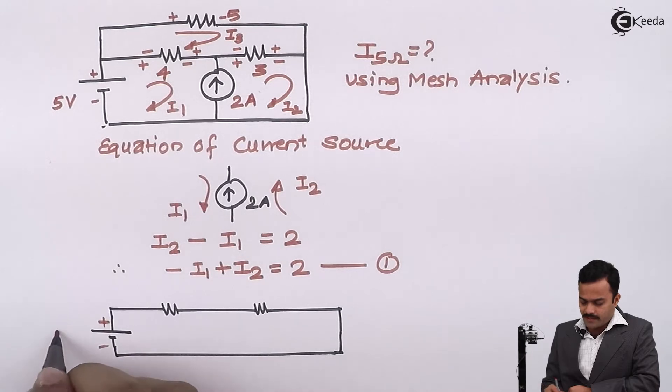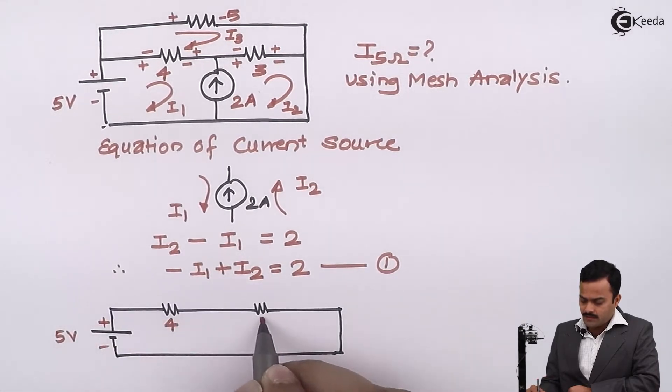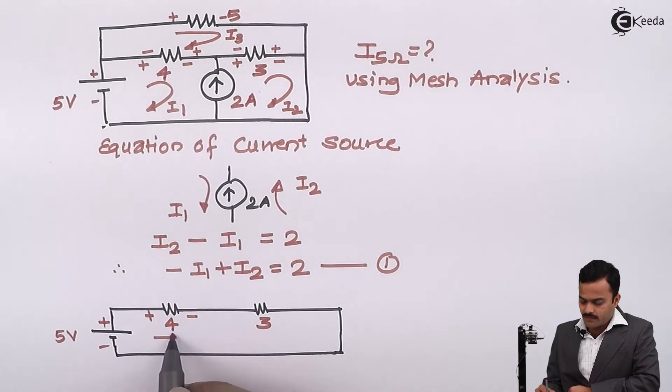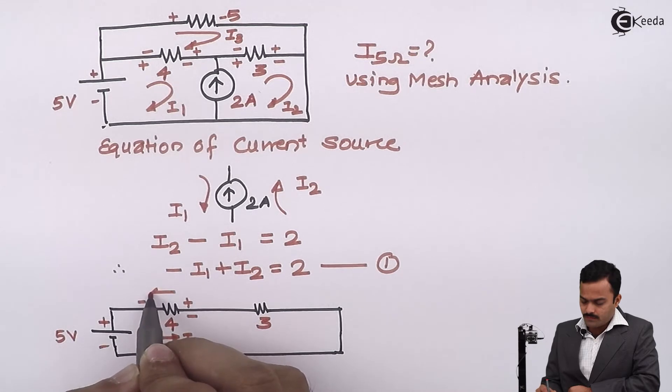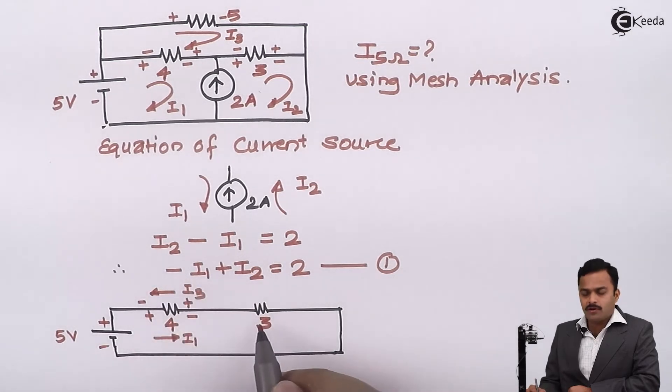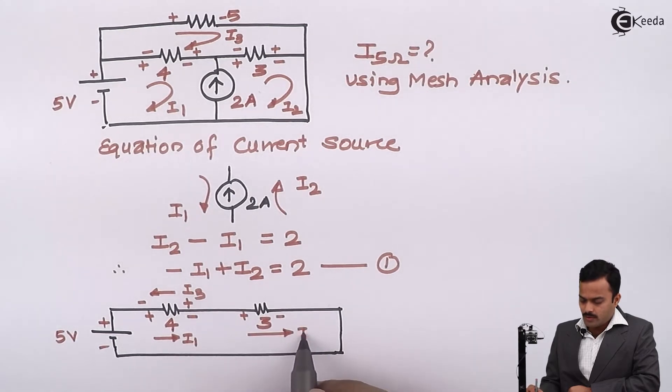So this is a battery of 5 volt, this resistance is of 4 ohm, and this resistance is of 3 ohm. Here, the polarity of voltage is plus minus because of I1 and plus minus because of I3. Similarly, for 3 ohm, plus minus because of I3.